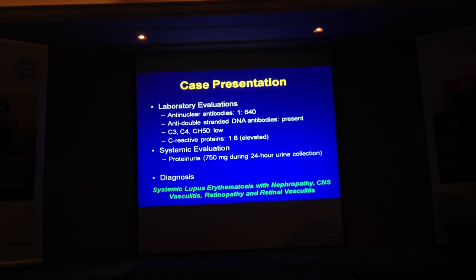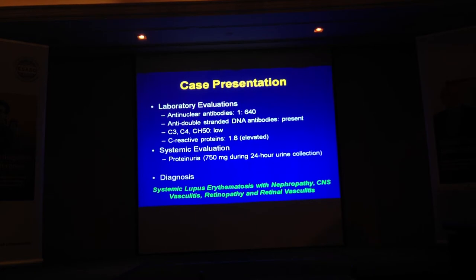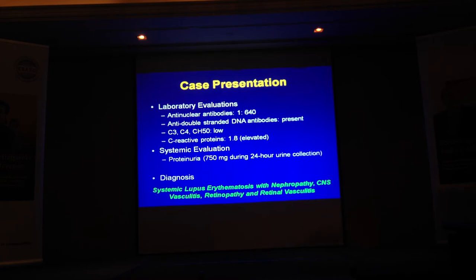Is the eye finding one of the 11 criteria for SLE? No. Unfortunately, the eye finding is not part of the 11 ACR criteria for SLE. So we have to discuss with the rheumatologist. The American College of Rheumatology report does not include it. But this is a real case where the eye finding led to the diagnosis of SLE. In about 6% of SLE cases, the eye finding is the first finding noticed.